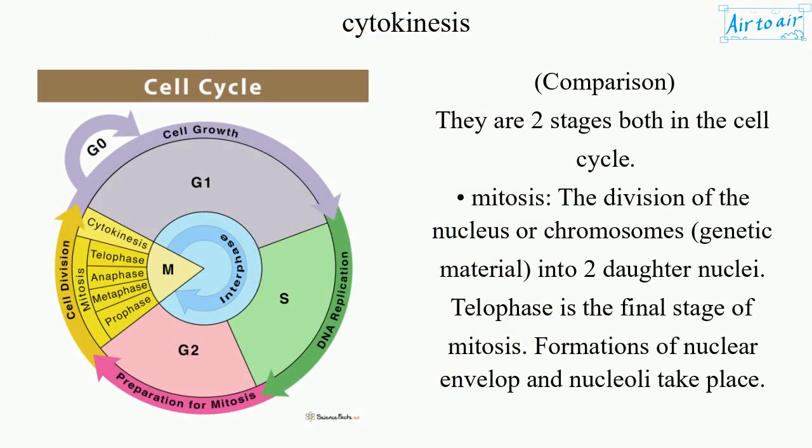Comparison: These are two stages both in the cell cycle. Mitosis is the division of the nucleus or chromosomes — genetic material — into two daughter nuclei. Telophase is the final stage of mitosis, during which formations of the nuclear envelope and nucleoli take place.